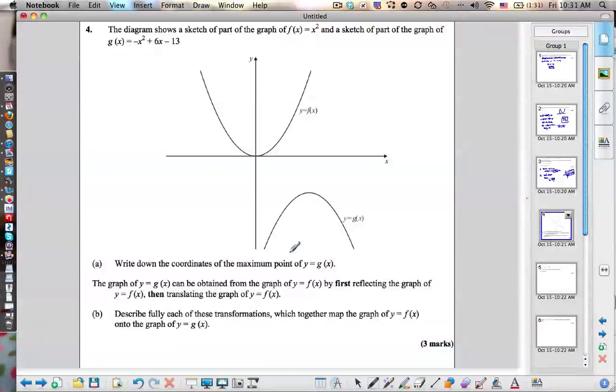Number 4, we have this quadratic function, x squared, and then this function right here, which is negative x squared plus 6x minus 13. We need to write down the coordinates for the maximum point of g of x.